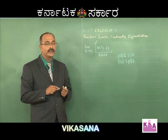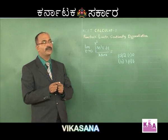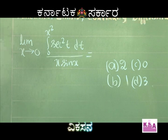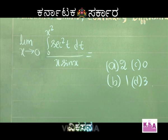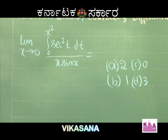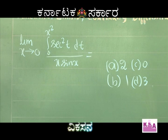Next problem: limit as x tends to 0 of the integral from 0 to x² of sec²(t) dt, divided by x·sin(x). Options are: A) 2, B) 1, C) 0, D) 3.